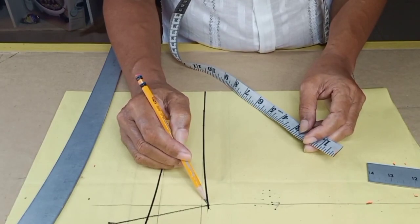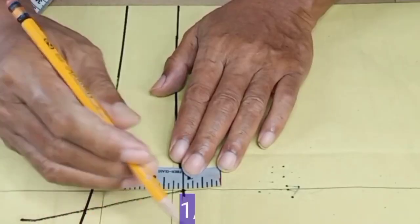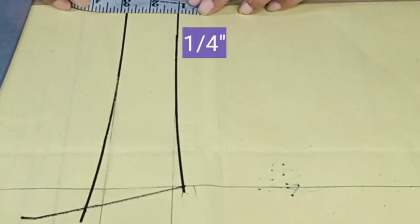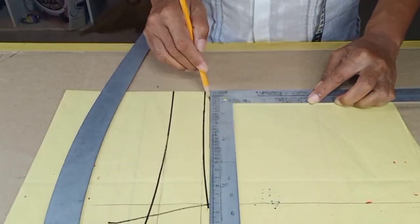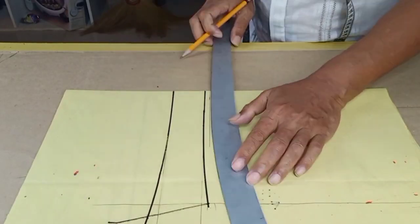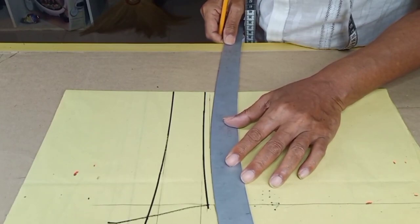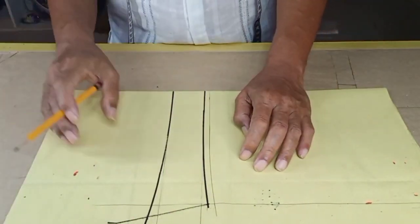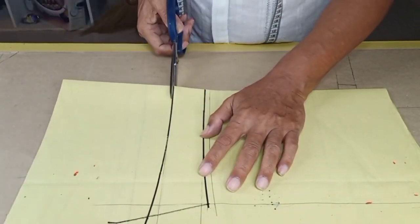And from here, add one quarter of an inch for sewing allowance. Connect the lines. Be sure that sewing allowance is evenly added to collar lines. Let us now cut the collar pattern.